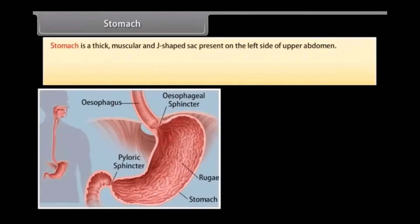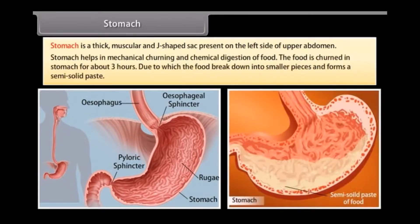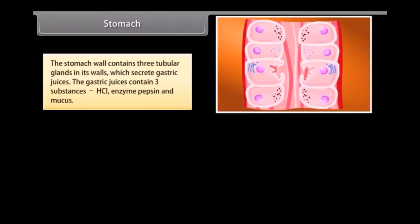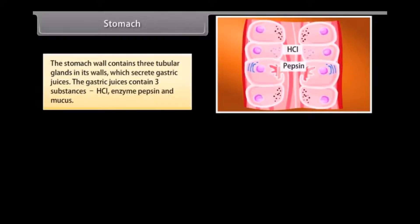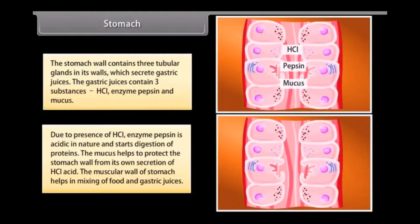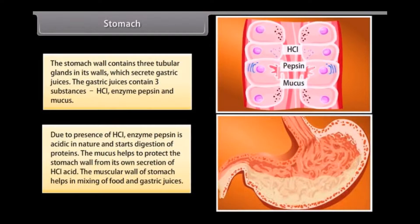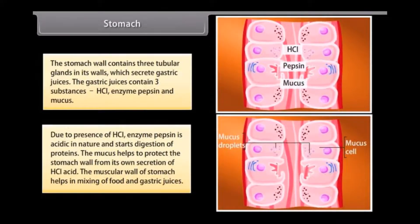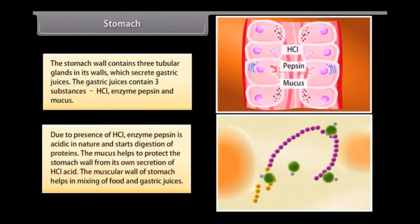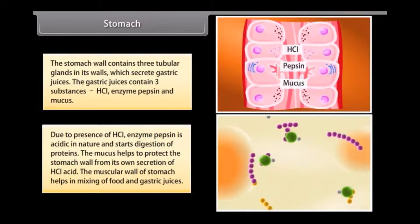Stomach is a thick muscular, J-shaped sac present on the left side of the upper abdomen. It helps in mechanical churning and chemical digestion of food. Food is churned in the stomach for about three hours, breaking it down into smaller pieces to form a semi-solid paste. The stomach wall contains tubular glands that secrete gastric juices containing HCl, enzyme pepsin, and mucus. Pepsin starts digestion of proteins, while mucus protects the stomach wall from HCl acid.